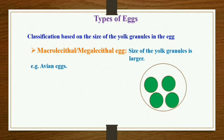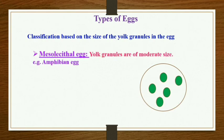Mesolecithal eggs are characterized by the presence of moderate-sized yolk granules, meaning they are not as small as microlecithal eggs nor as large as megalecithal eggs. The best example of this is the amphibian egg.